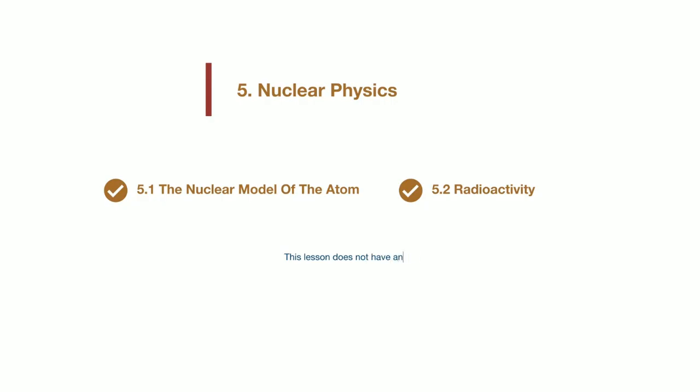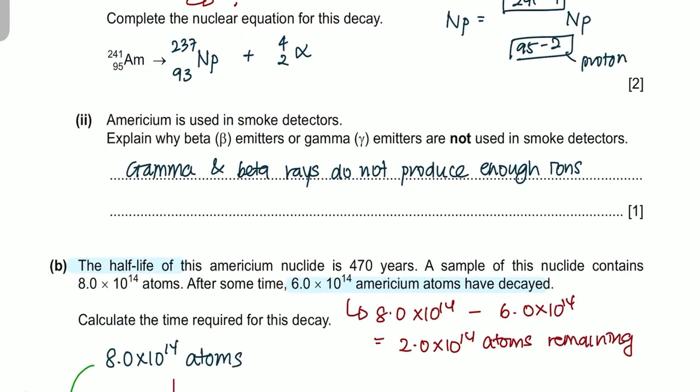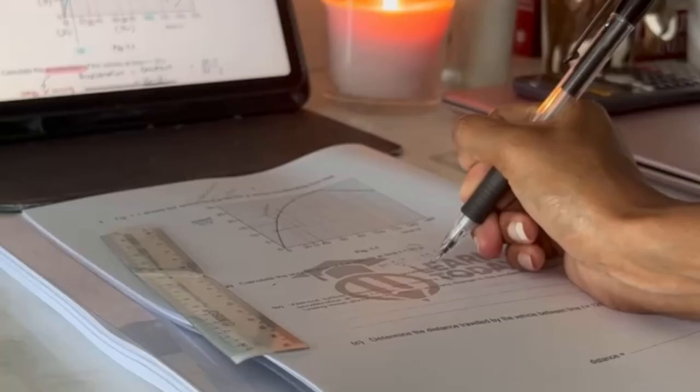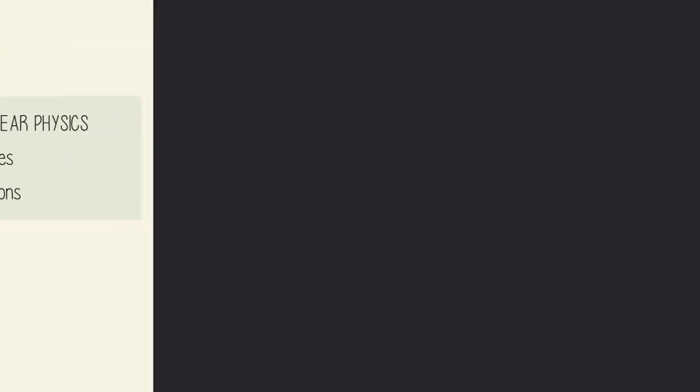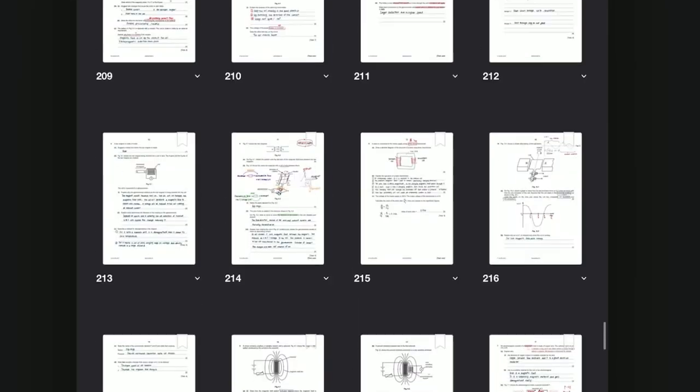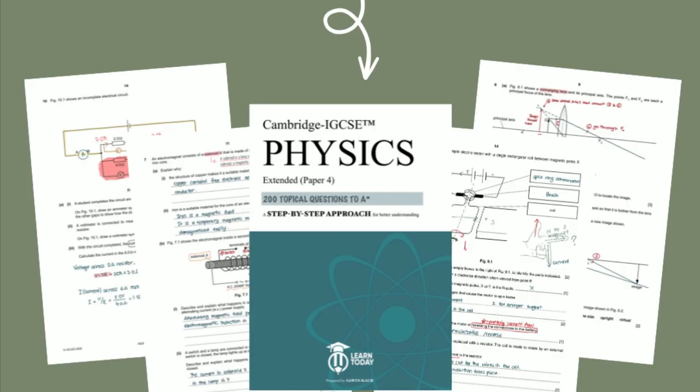So actually, there's no particular formulas that you need to remember in this chapter, but you should be able to know how to write your nuclear notation. And the most important part or calculation in this chapter would be calculating your half-life. I would recommend you to try out some practice questions or get the reference book from our platform to try on these essential questions and get step-by-step guidance into answering your past year questions.